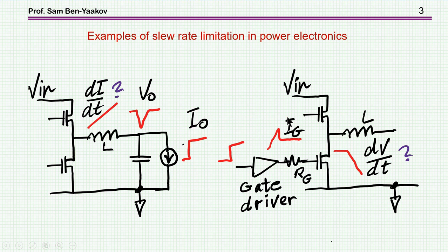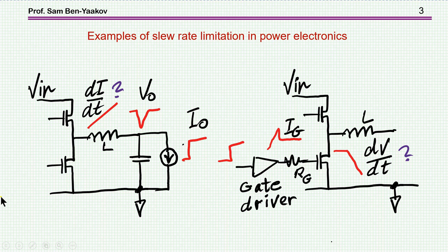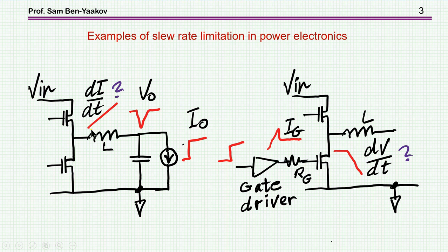Here is an example of slew rate limitation in power electronics. I'm showing a synchronous buck converter, and suppose at the output we have a sharp, large change in the load current. Obviously the voltage will drop and a feedback system will try to correct it. To correct the voltage, the average voltage has to rise and consequently the current will start rising. There is a limitation on the rate at which this current can rise — this is the dI/dt slew rate limitation.